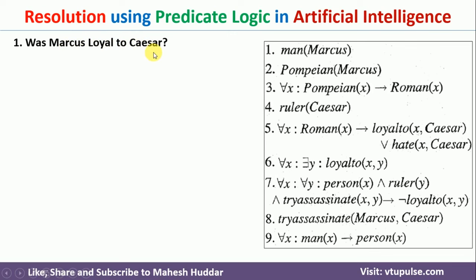If you look at the 7th premise, what it says is: for all x, for all y, if x is a person and y is a ruler and x is trying to assassinate y, then x is not loyal to y. So if you are able to get these 3 premises, then you can say that x is not loyal to y — where x is Marcus and y is Caesar. If you are not able to get these 3 premises, then x is loyal to y, meaning Marcus is loyal to Caesar.